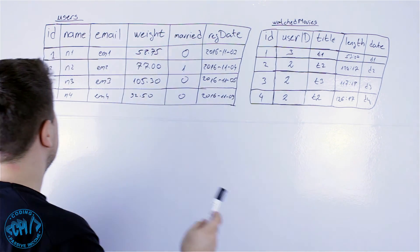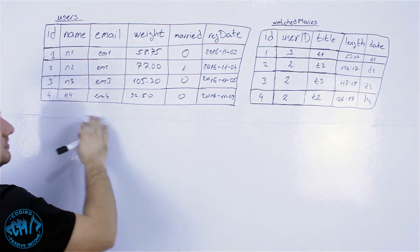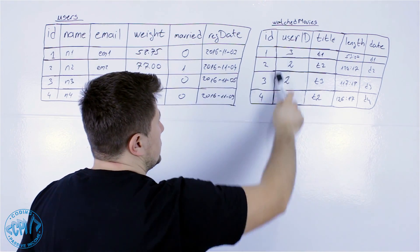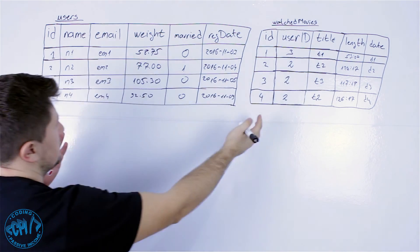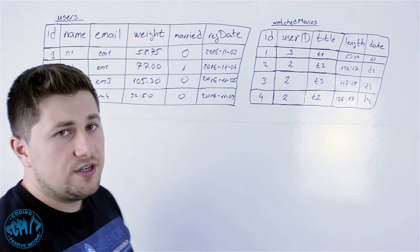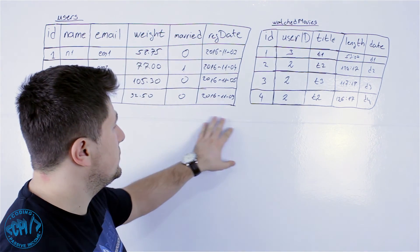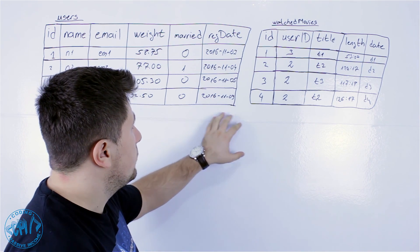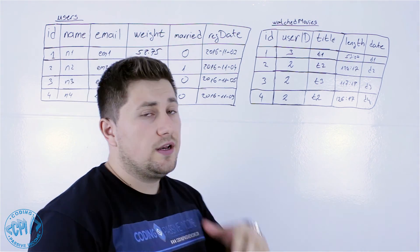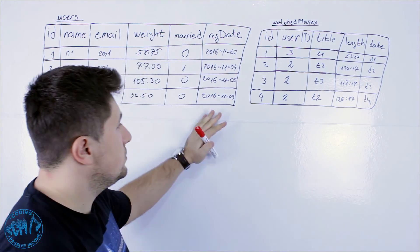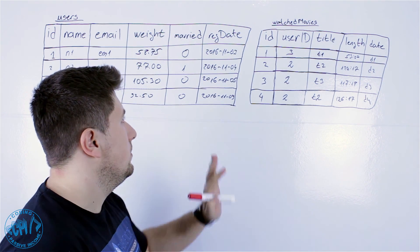You can see here this ID is basically the user ID and is stored here. So it is pretty much the same. And now the question is how we can in one SQL query get the results from both tables and also how we can know who of these users didn't watch any movie.